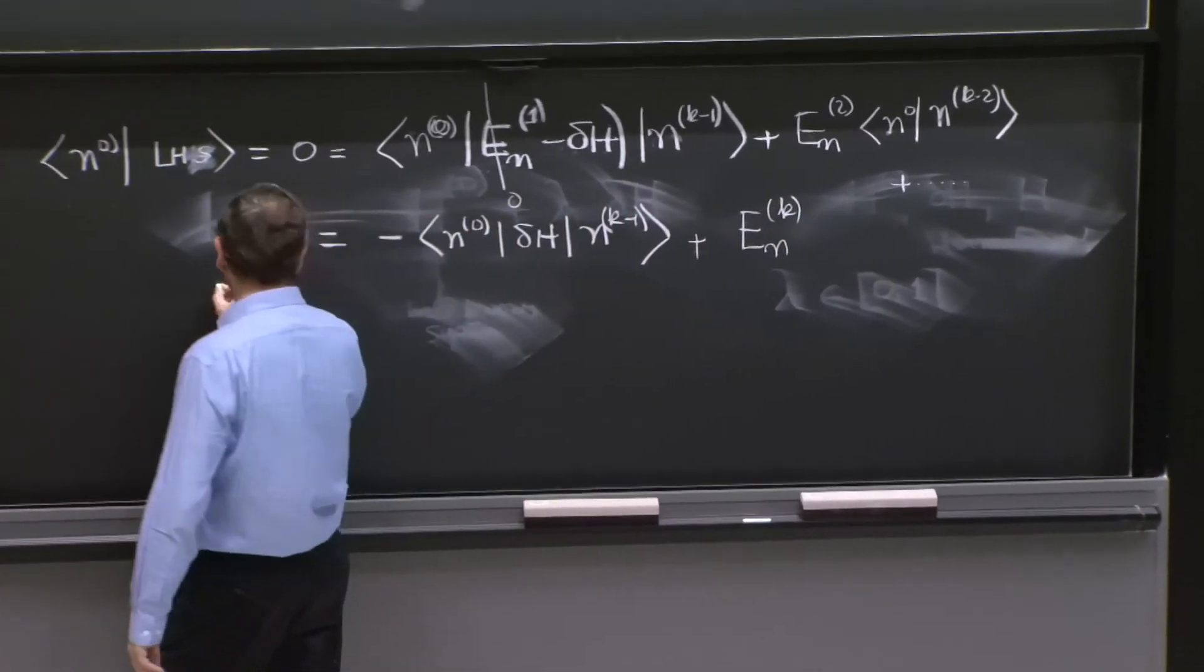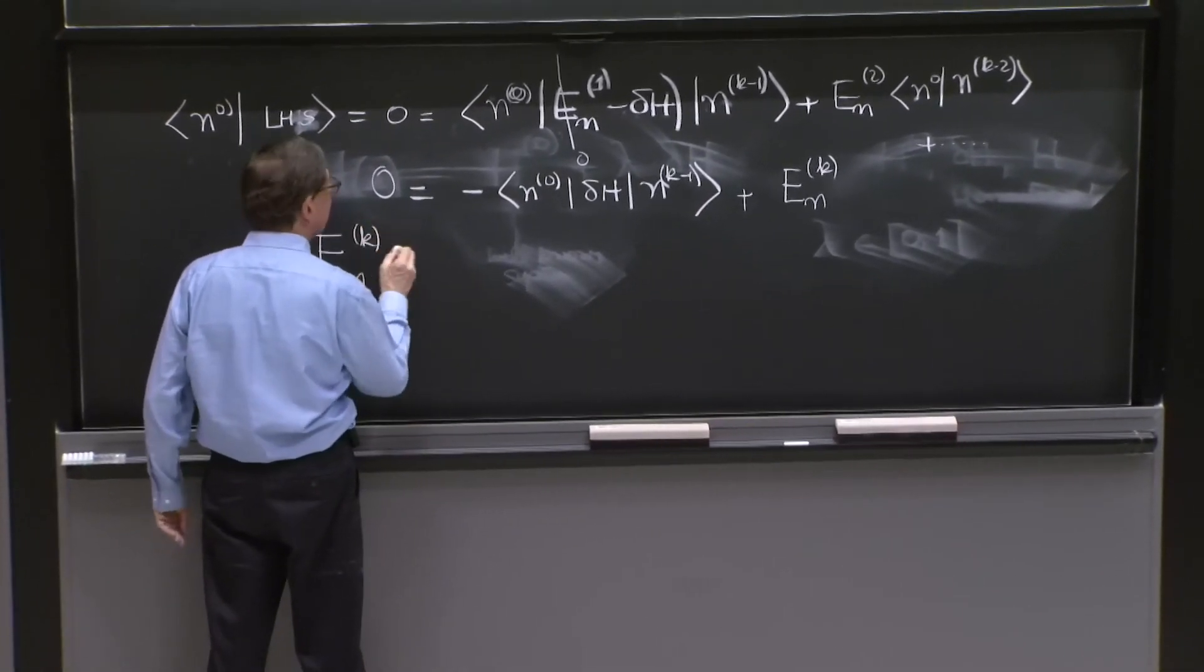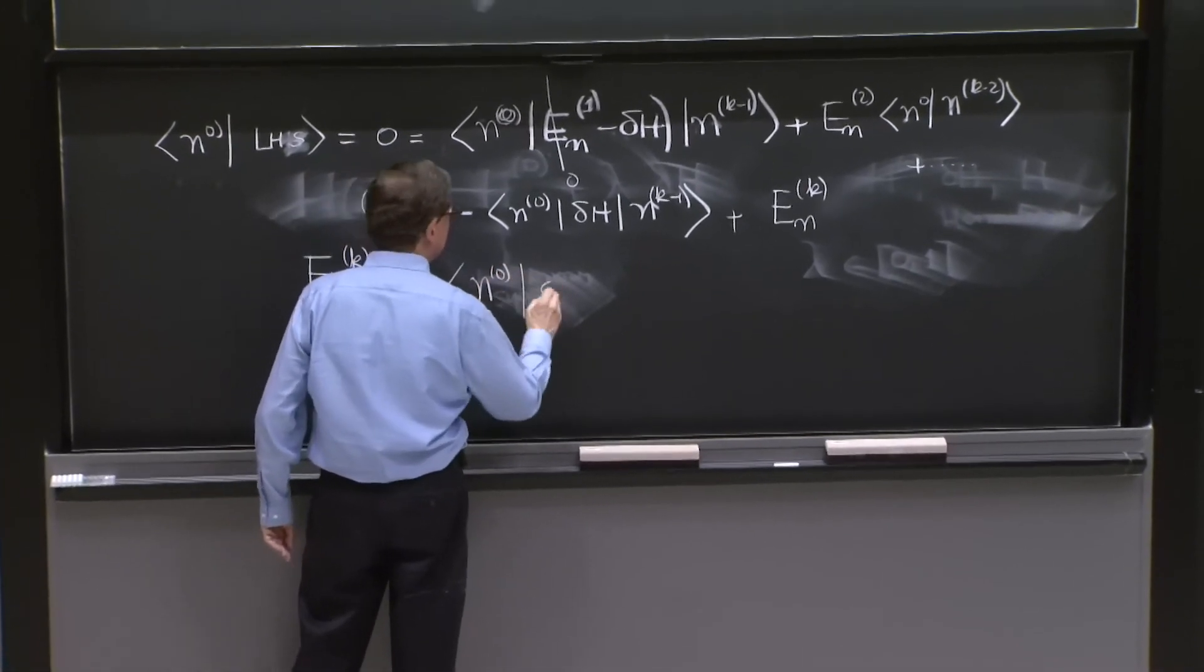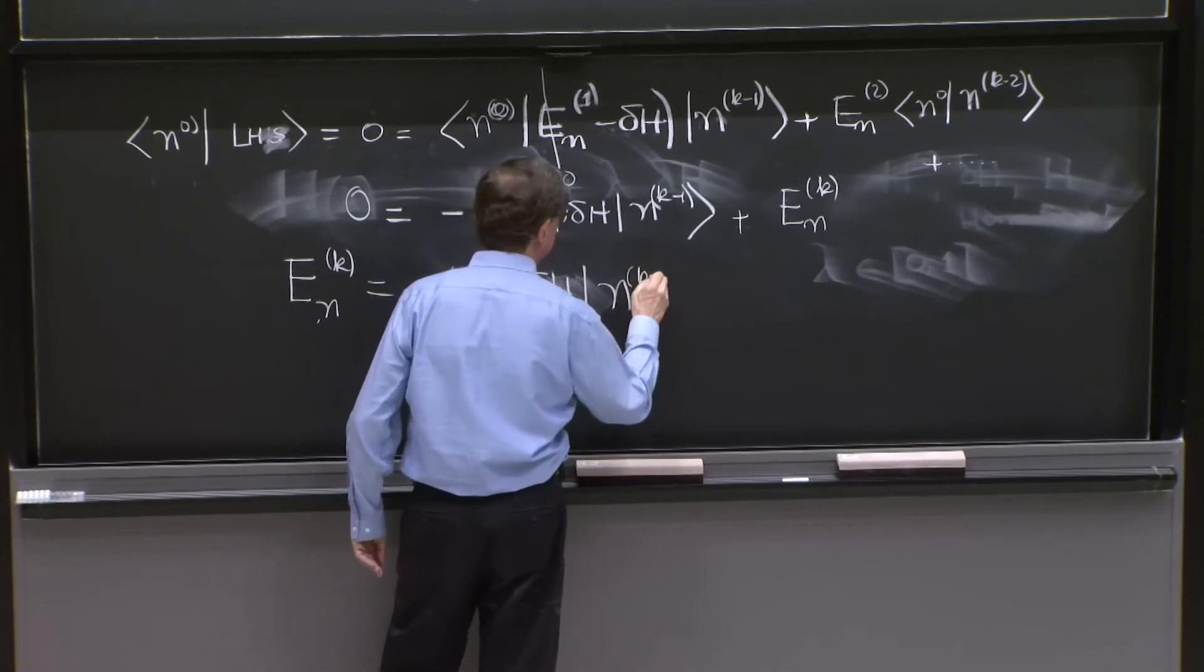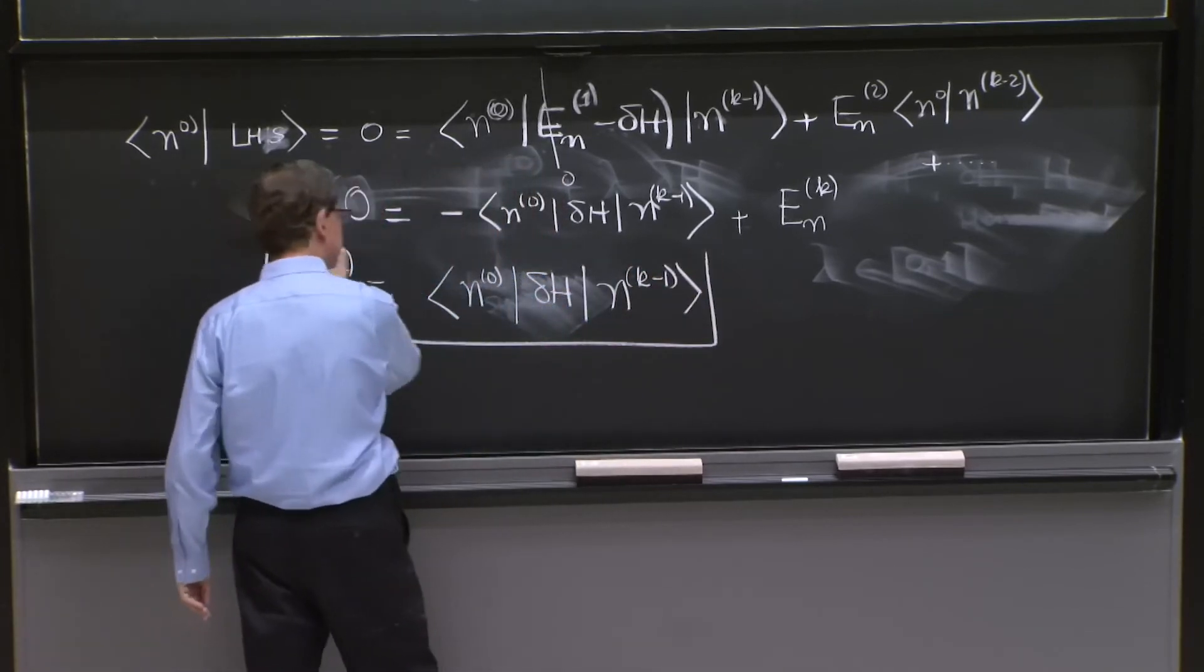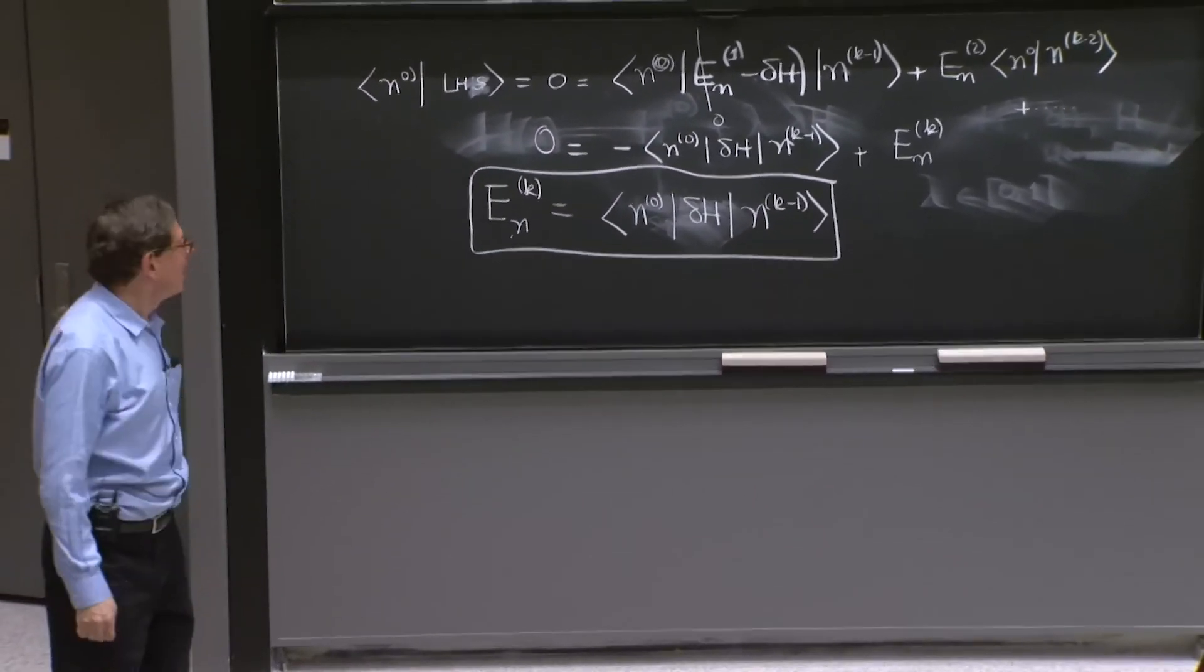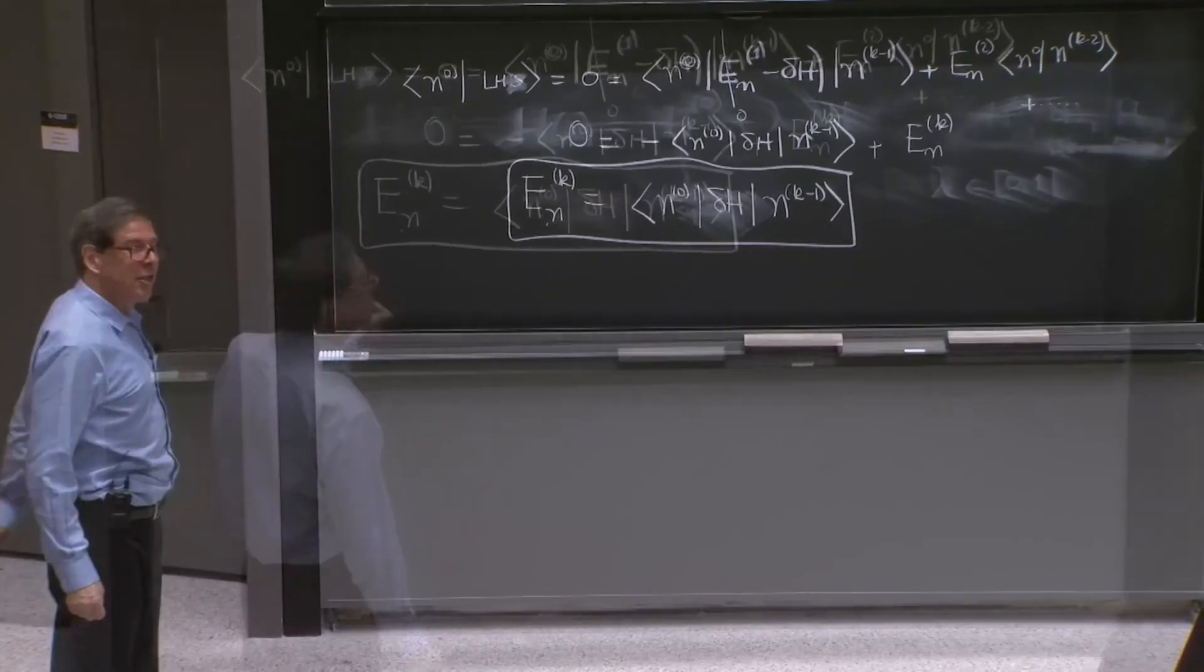So this gives you the result that enk is equal to n0 delta h nk minus 1. I box it because it's another nice formula.